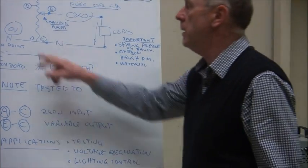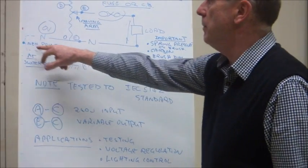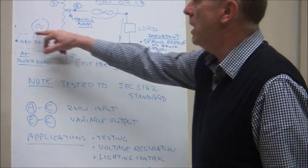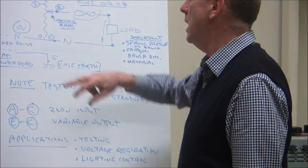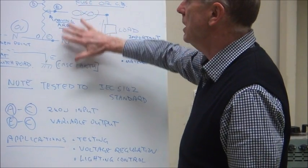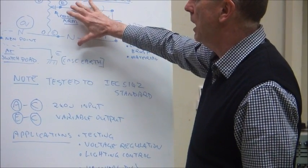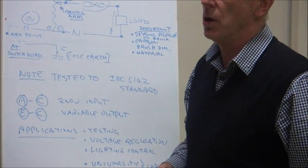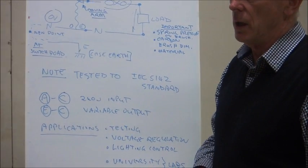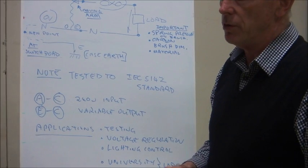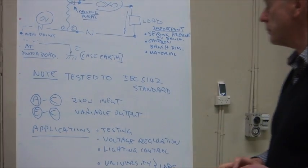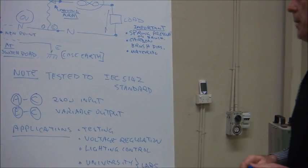An MEN, the neutral and the earth are connected back at the switchboard, so you have an MEN connection. That means you can use a residual current device or an earth leakage circuit breaker here on the output side to protect you against electric shock. And that's something that in a TAFE or in a laboratory would be recommended. So that's about it.